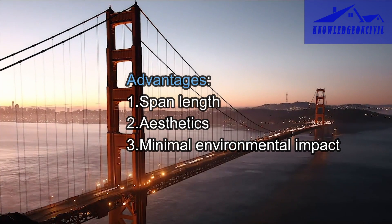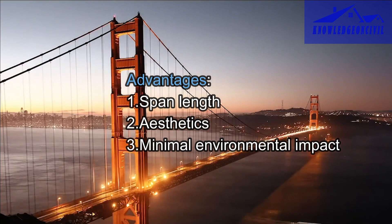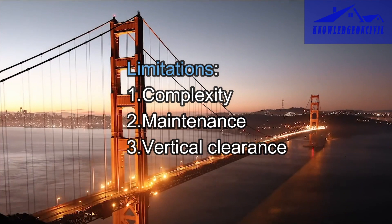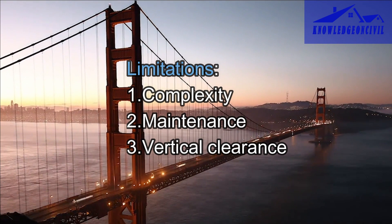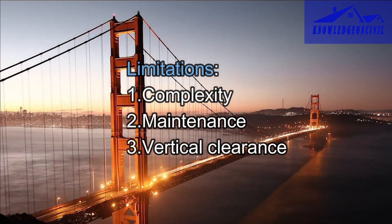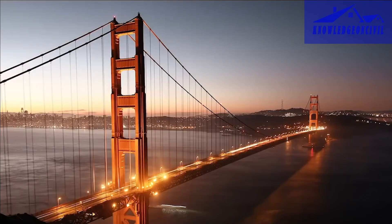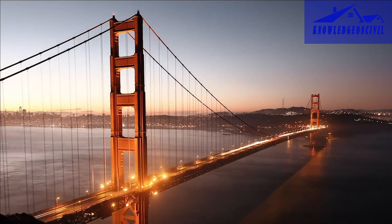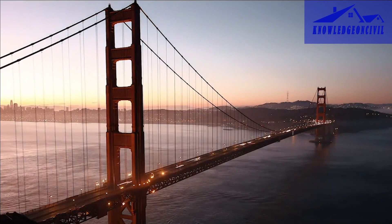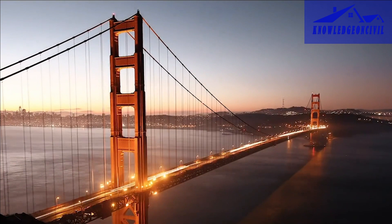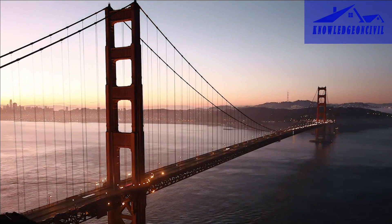Suspension bridges can have minimal environmental impact, especially when built in sensitive areas. However, they are complex and expensive to design and build, requiring precise engineering, and can require regular and costly maintenance due to their size and complexity. The height of the towers may also limit vertical clearance for boats and ships passing beneath. A suspension bridge is recognized for its lengthy main cables, towering pillars, and suspended bridge deck — excellent for covering vast distances but challenging and expensive to build and maintain.